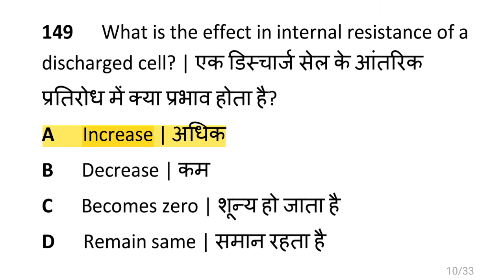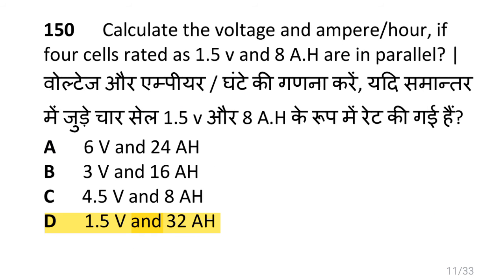What is the effect of internal resistance of a discharged cell? i.e. it increases. Calculate the voltage and ampere hour if four cells rated as 1.5 Volt and 8 Ampere hour are connected in parallel. i.e. 1.5 Volt and 32 AH.